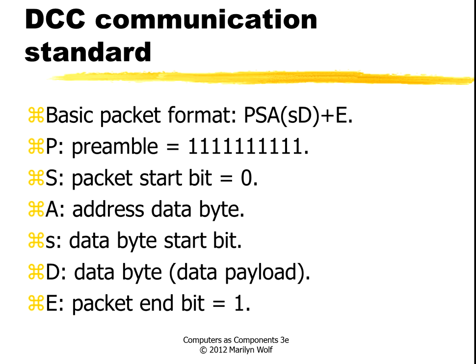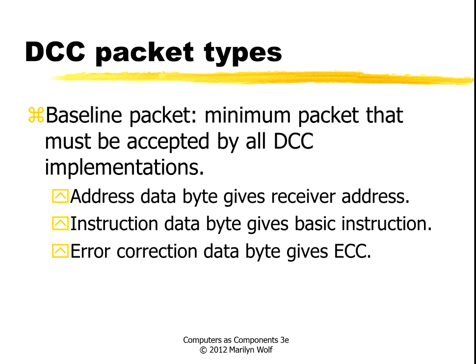Here is a regular expression that describes the packet format. P is the preamble — that's all ones, eight ones. Then there's a start bit that's a zero, then an address, then the data byte start bit, and then the actual data payload. At the end you put a one bit. The standard allows manufacturers to create additional types of packets — for instance, if you have a special feature on your train, you can create a packet type that controls that feature, like a special whistle.